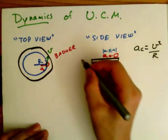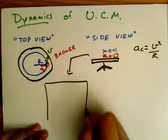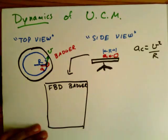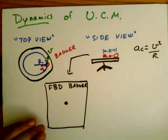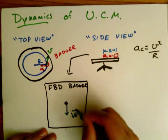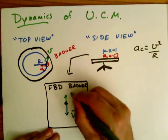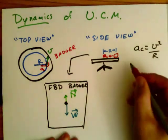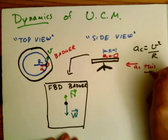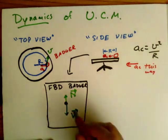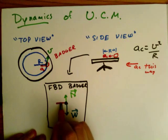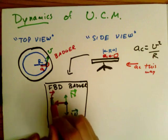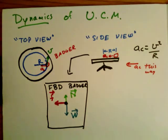So we follow our recipe. We know the acceleration. Let's draw a free body diagram of the badger to figure out what the horizontal forces are. Vertical forces are easy, weight and normal. They're equal and cancel each other out. What about the horizontal direction? The centripetal acceleration is to the left. We know that there's a net force to the left and the only force that can be is the force of friction because it's parallel to the surface.